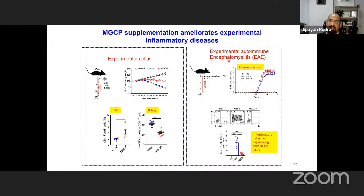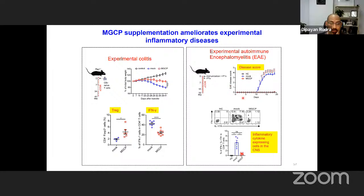The second model was experimental autoimmune encephalomyelitis (EAE), a model for multiple sclerosis in which the immune system attacks the myelin sheath of the nervous system. We know regulatory T cells play a very important role in this context.